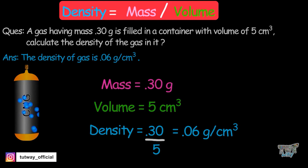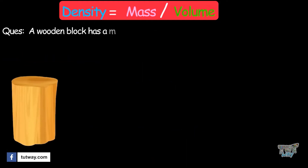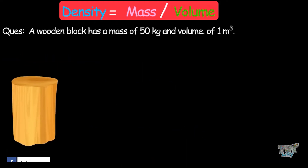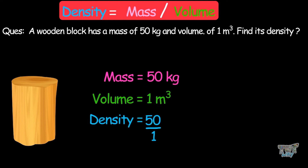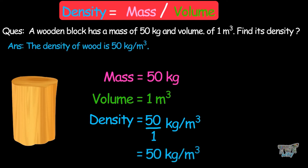Here we have another example. A wooden block has a mass of 50 kilograms and a volume of 1 cubic meter. Density equals mass divided by volume, so density is 50 divided by 1, which equals 50 kilograms per cubic meter.